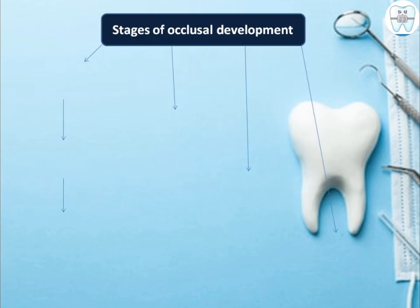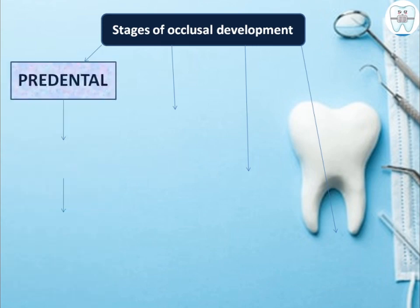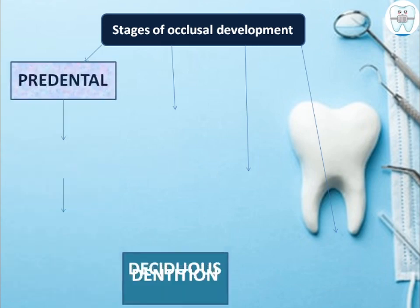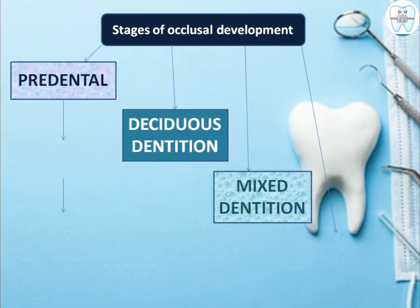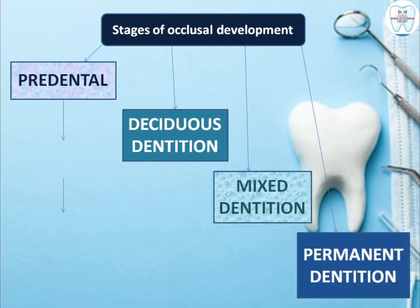The stages of occlusal development can be divided into four: first is pre-dental, then deciduous dentition, then mixed dentition, and then permanent dentition. There are two important key features of the pre-dental dentition.